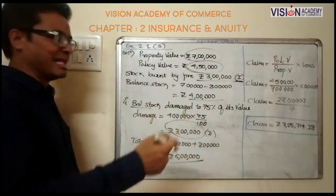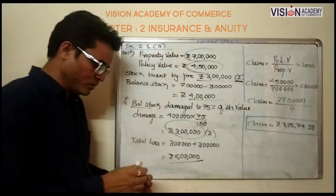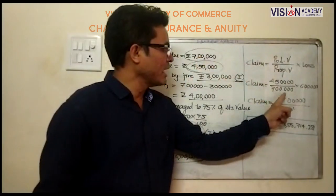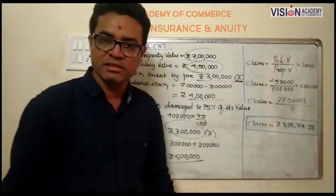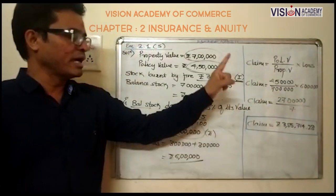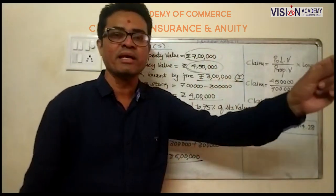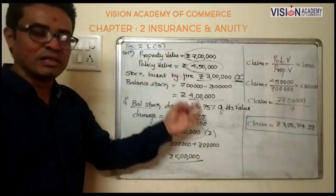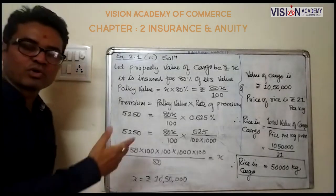As per the required formula, claim equals policy value upon property value into loss. Policy value 4 lakhs 50 thousand, property value 7 lakhs, and loss is rupees 6 lakhs. So it comes to 27 lakhs upon 7, and the answer is rupees 3 lakhs 85 thousand 714.28. This is the required value of claim. Now question number 6.